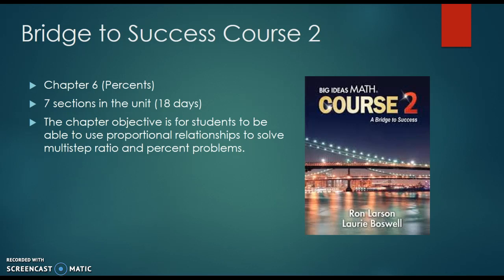In that chapter, there are seven sections or lessons. The schedule suggests it should take about 18 days to teach those seven sections. The objective in the chapter is for students to be able to use proportional relationships to solve multi-step ratio and percent problems.